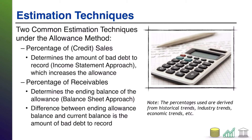The percentages are derived by each company based on things like historical trends, industry trends, and economic trends. Companies look at what they historically don't collect, whether they're entering an economic downturn that might increase uncollectibles, or what competitors in the industry typically don't collect. You derive your own company-specific percentage regardless of which technique you use. It's also worth noting that percent of receivables is a more accurate approach because you're constantly looking at the actual receivables still outstanding from customers, rather than simply the sales made.